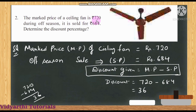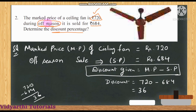Question number 2: The market price of a ceiling fan is ₹720. During off season it is sold for ₹684. Determine the discount percentage. The market price of the ceiling fan is ₹720 and the off-season selling price is ₹684.